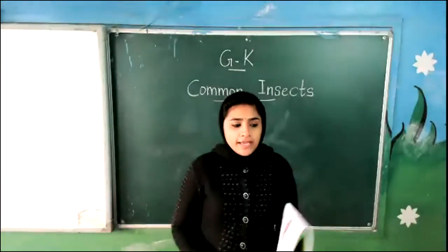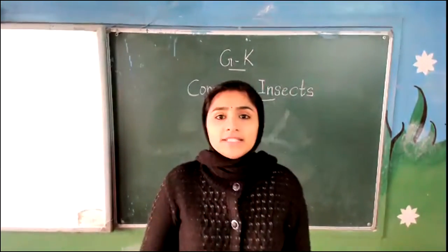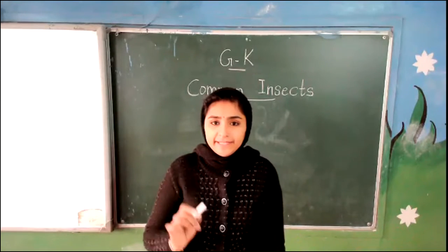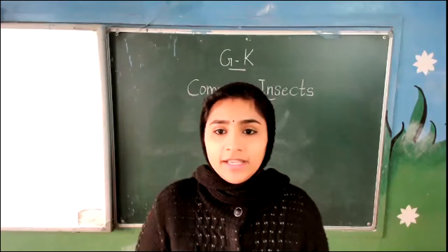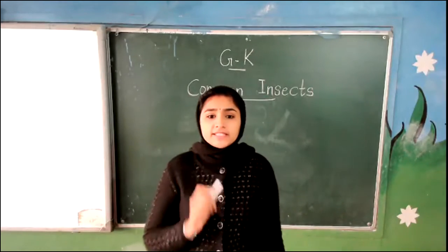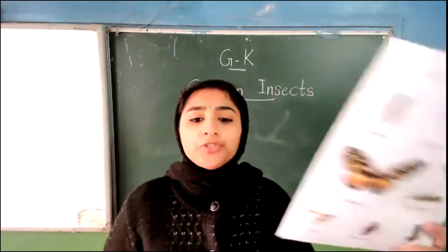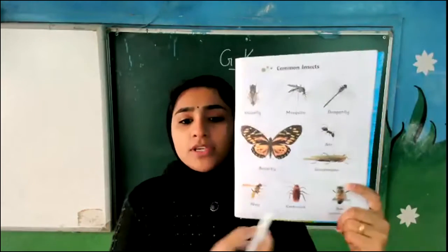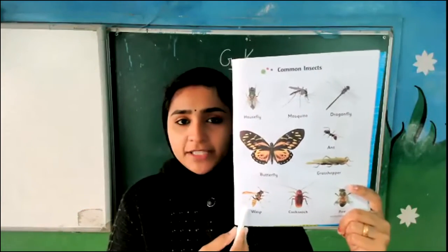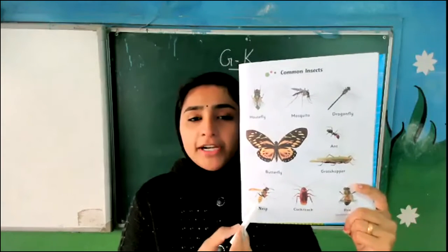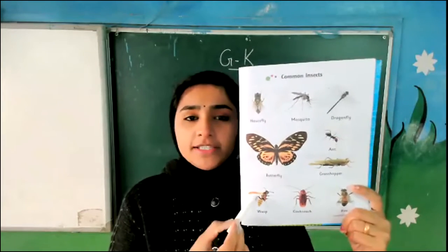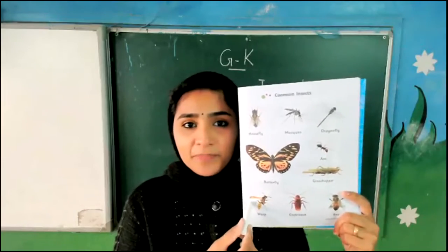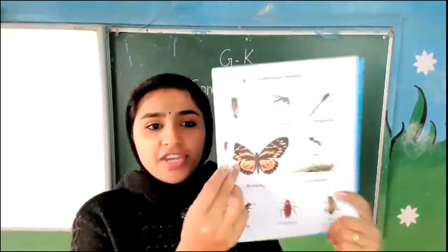As you all know, insects are having 6 legs. And now we are going to learn the names of some common insects. These insects will be familiar to you. You can see them in your daily life — they are visible in your daily life, coming to your home sometimes.